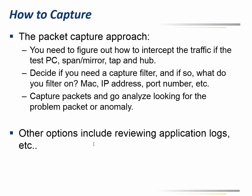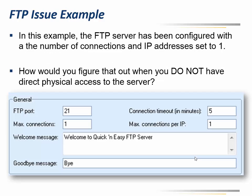Another option, if you don't want to capture any packets, is to try to figure out the behavior by looking at server logs or application logs. From my FTP server, I did something sneaky — I put the maximum connections per IP to one and the number of connections to one, simulating that the server has run out of connections.